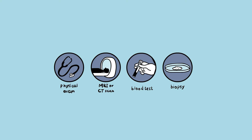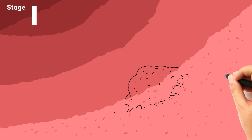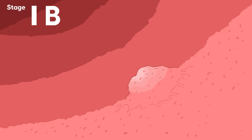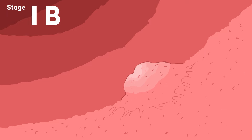Stage one non-small cell lung cancer. The cancer is found early, is in one lung, and has not spread to lymph nodes. It is divided into substages 1a and 1b based on the size of the tumor and how far it has spread inside one lung.